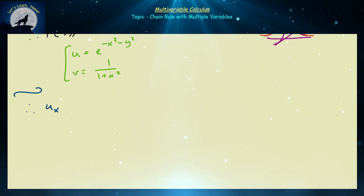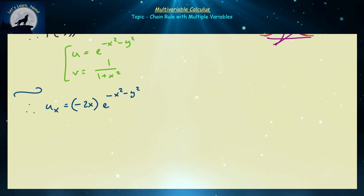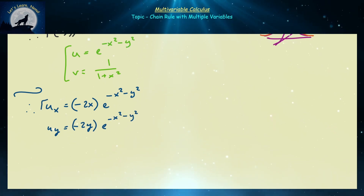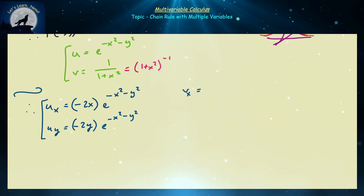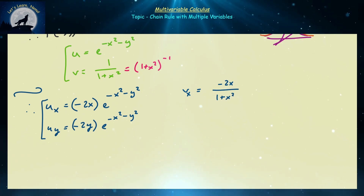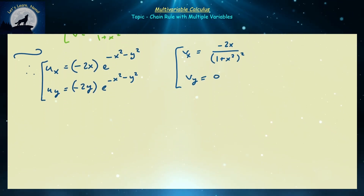Let's find the partial derivatives of u and v. Taking ∂u/∂x: y is constant, so the derivative of the exponential gives e^(−x²−y²) times the derivative of the exponent with respect to x, which is −2x. So ∂u/∂x = −2x·e^(−x²−y²). For ∂u/∂y we similarly get −2y·e^(−x²−y²). For ∂v/∂x, writing v = (1+x²)^(−1), we bring down −1, change the power to −2, and multiply by 2x, giving ∂v/∂x = −2x/(1+x²)². Since v has no y, ∂v/∂y = 0.